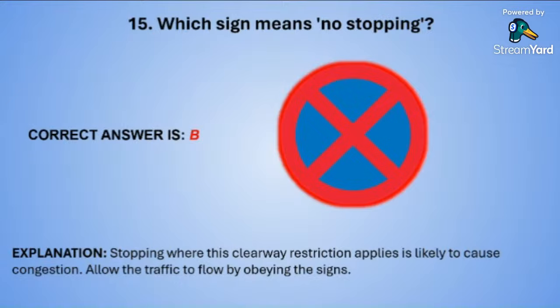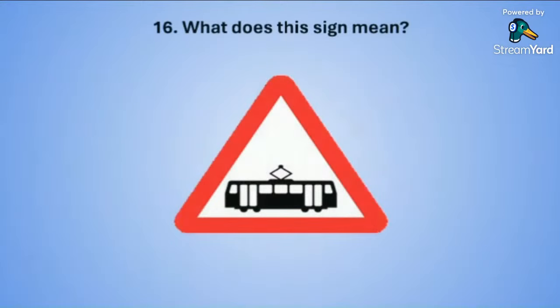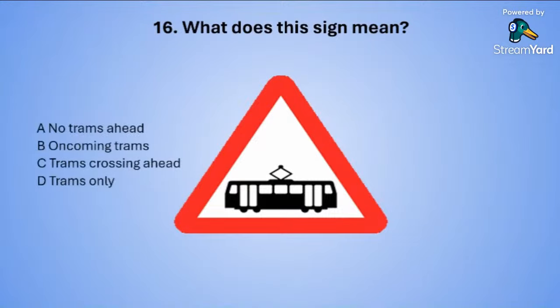Question number sixteen: What does this sign mean? A: no trams ahead. B: oncoming trams. C: trams crossing ahead. Or D: trams only.